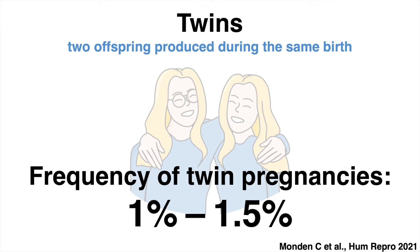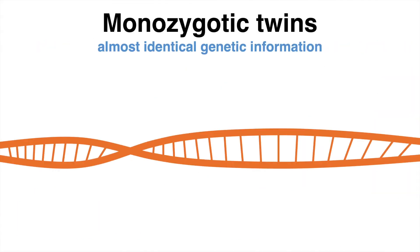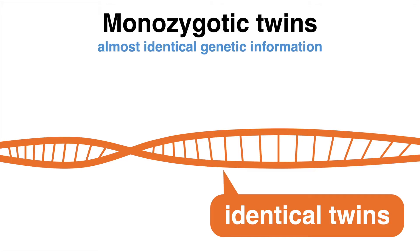There are two types of twins: monozygotic and dizygotic twins. Monozygotic twins share almost identical genetic information, which is why they are often called identical twins.